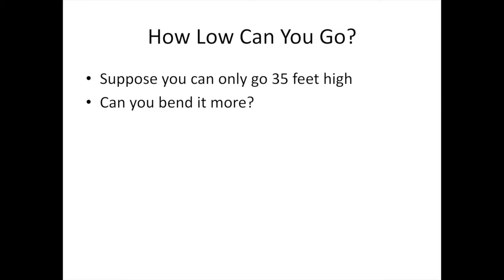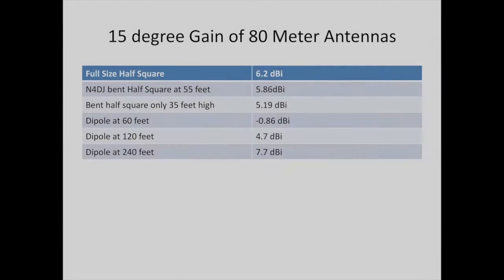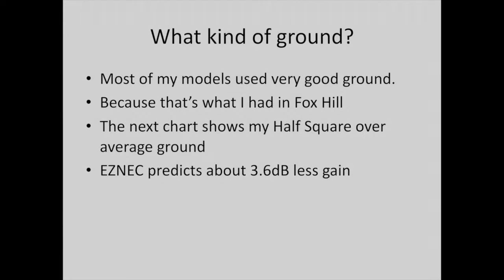So how low can you go? Suppose you can only go 35 feet high. Can you bend it more to compensate for the lack of height on an 80 meter half square? A bent half square only 35 feet high has a gain of about 5.19 dBi. So that's actually worth doing because it'll still beat a dipole at 120 feet.